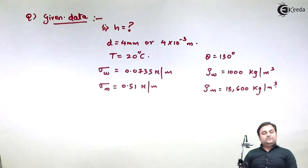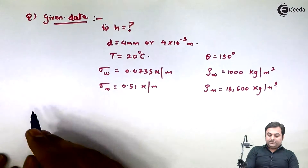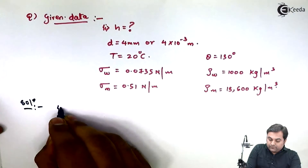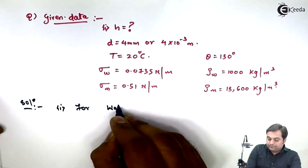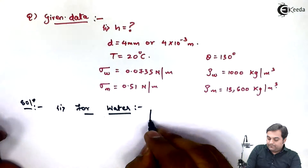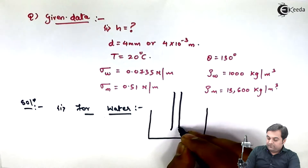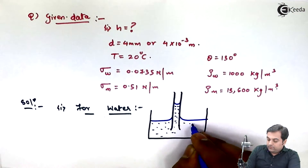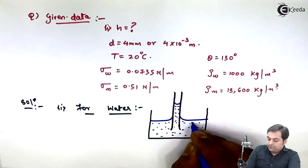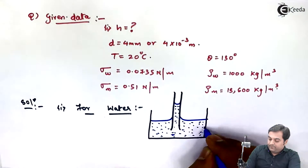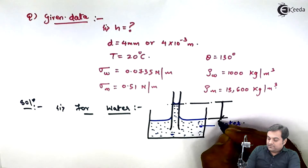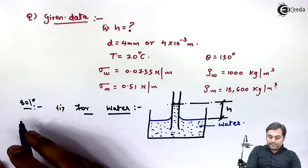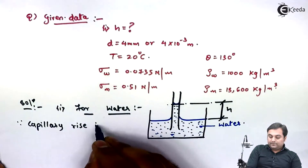Now let us solve the problem. First, I'll find the capillary effect for water. I'll draw a diagram — if we insert a glass tube inside a tank of water, water rises inside the glass tube, and that effect is called capillary rise. This height of water rising can be found using the formula for capillary rise.